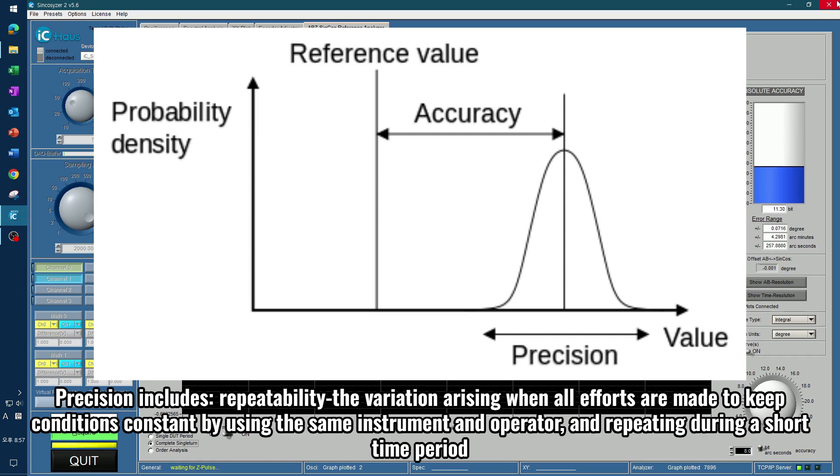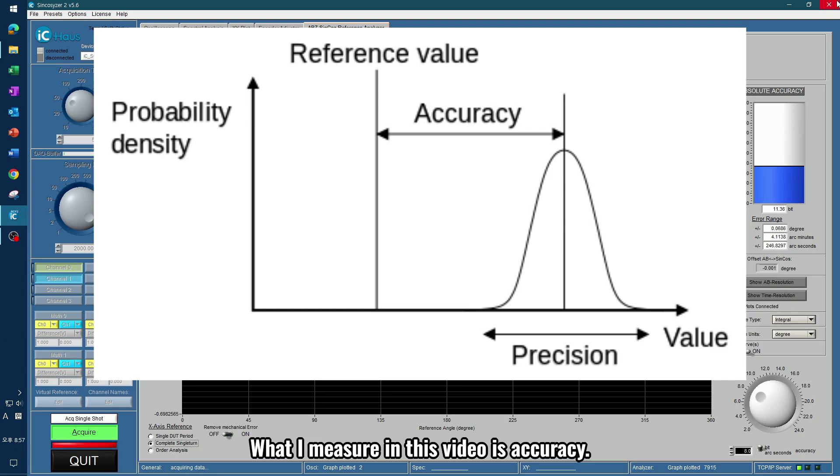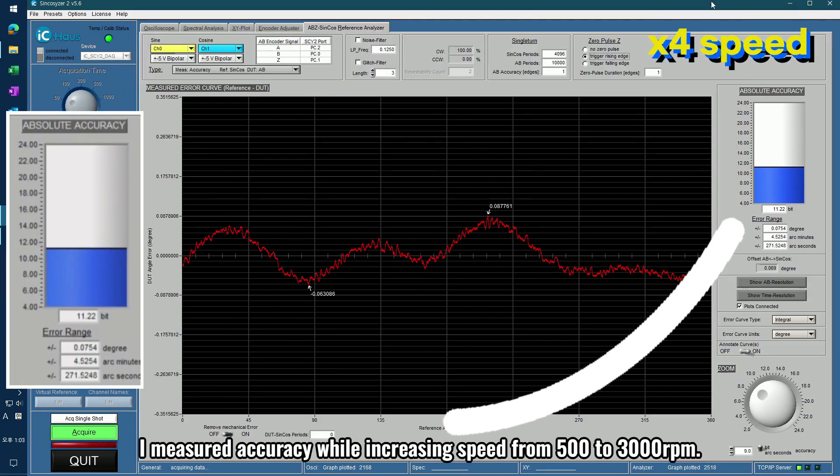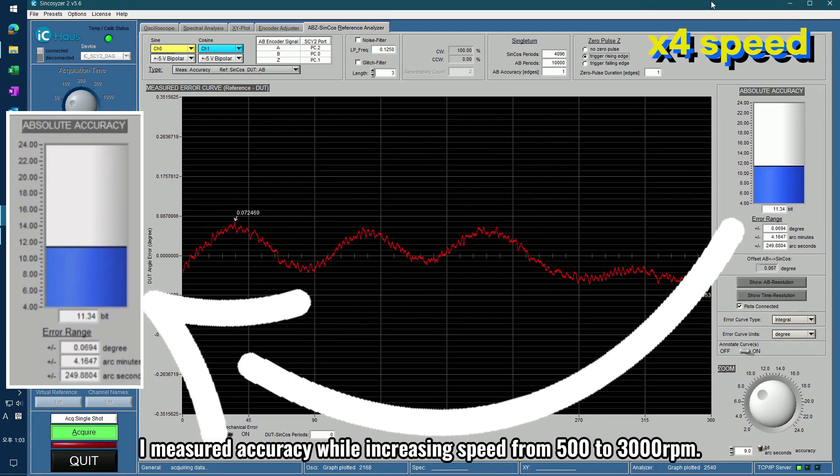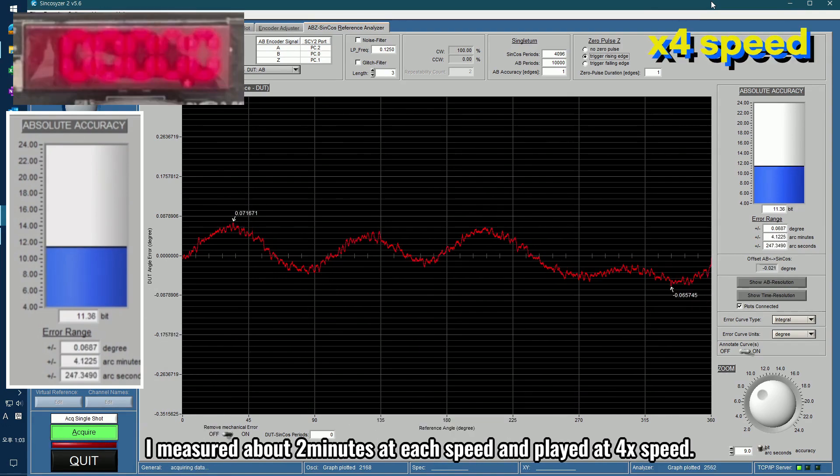Precision includes repeatability, the variation arising when all efforts are made to keep conditions constant by using the same instrument and operator, and repeating during a short time period. What I measure in this video is accuracy. I measured accuracy while increasing speed from 500 to 3000 revolutions per minute. I measured about 2 minutes at each speed and played at 4x speed.